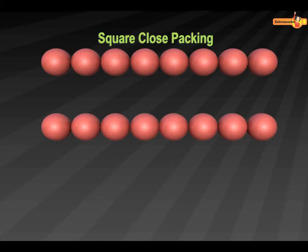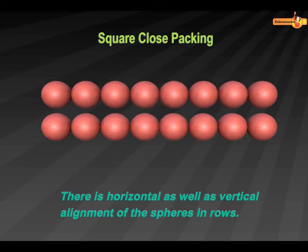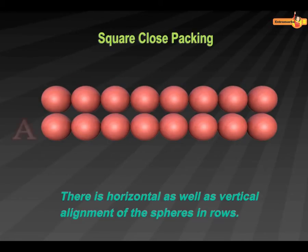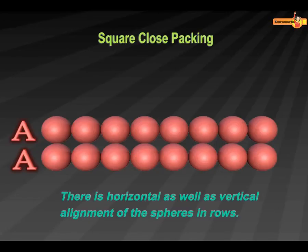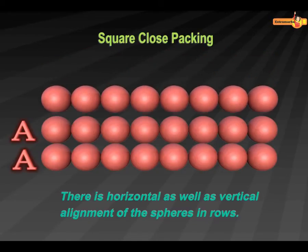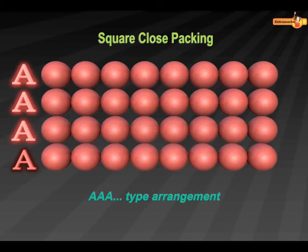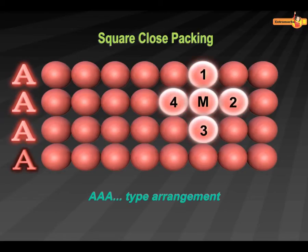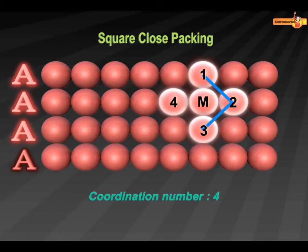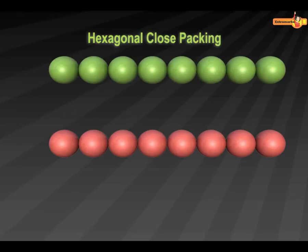In square close packing, the second row is placed in such a way that the spheres of the first row are exactly above the spheres of the second row. The first row is called an A-type row, meaning the second row is also called an A-type row. Similarly, the third row is also an A-type row, so this arrangement is called an AAA-type arrangement. Since sphere M is touching four other spheres, the coordination number of this arrangement is four. On joining the centers of these spheres, a square is formed — that is why this type of close packing is called square close packing.